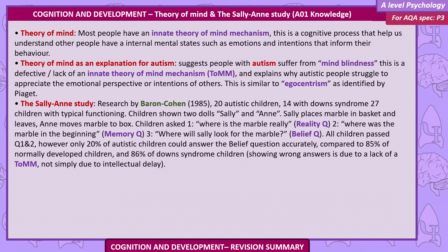The Sally-Ann Study. Research by Baron-Cohen (1985) compared 20 autistic children to 14 with Down syndrome and 27 children with typical functioning. Children were shown two dolls, Sally and Anne. Sally places a marble in a basket and leaves. Anne moves the marble to a box. Children were then asked three questions: 1) Where's the marble really? (the reality question), 2) Where was the marble in the beginning? (the memory question), and 3) Where will Sally look for the marble? (the belief question). All children passed questions 1 and 2. However, only 20% of autistic children could answer the belief question accurately, compared to 85% of normally developed children and 86% of Down syndrome children, showing that wrong answers are due to a lack of theory of mind, not simply due to intellectual delay.